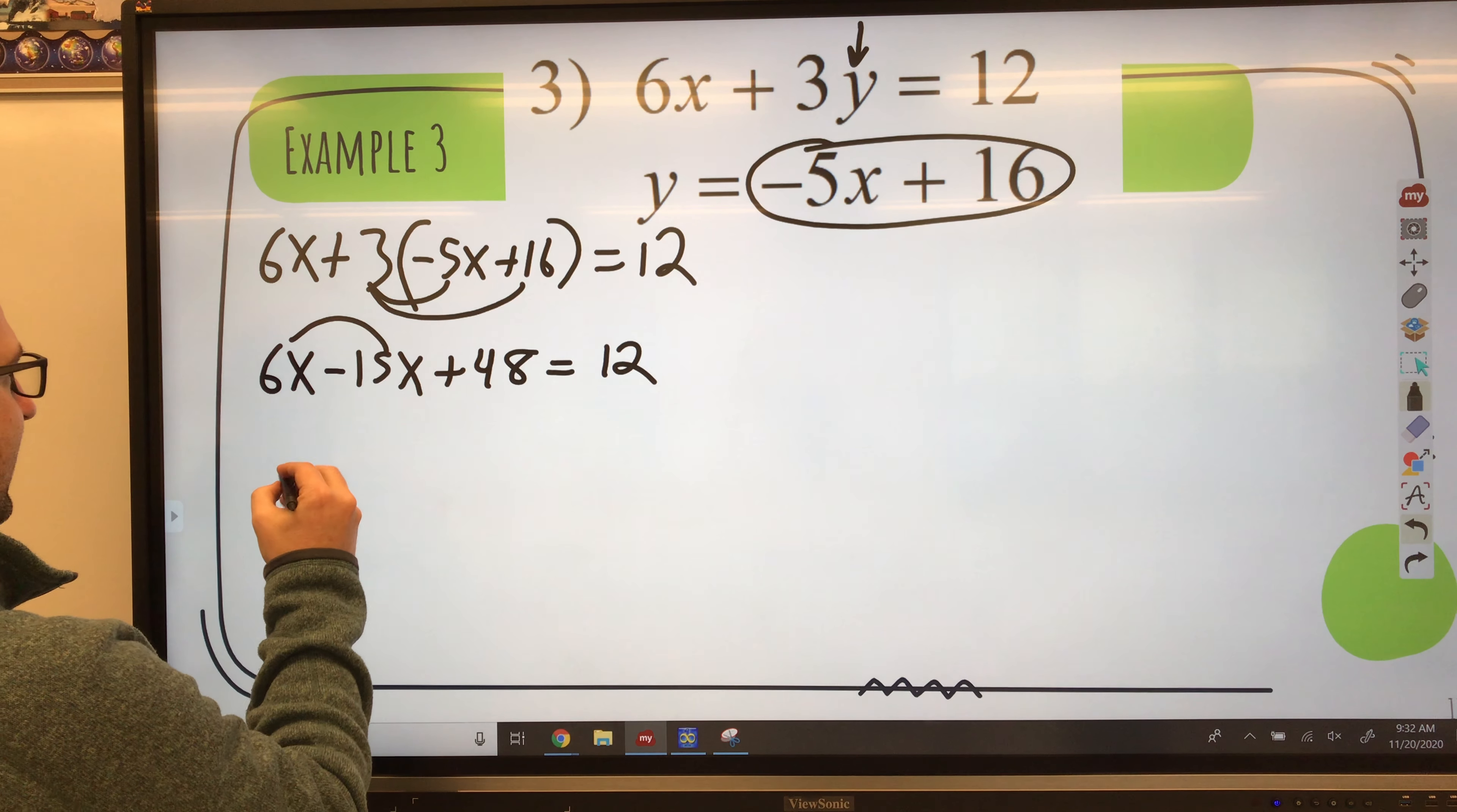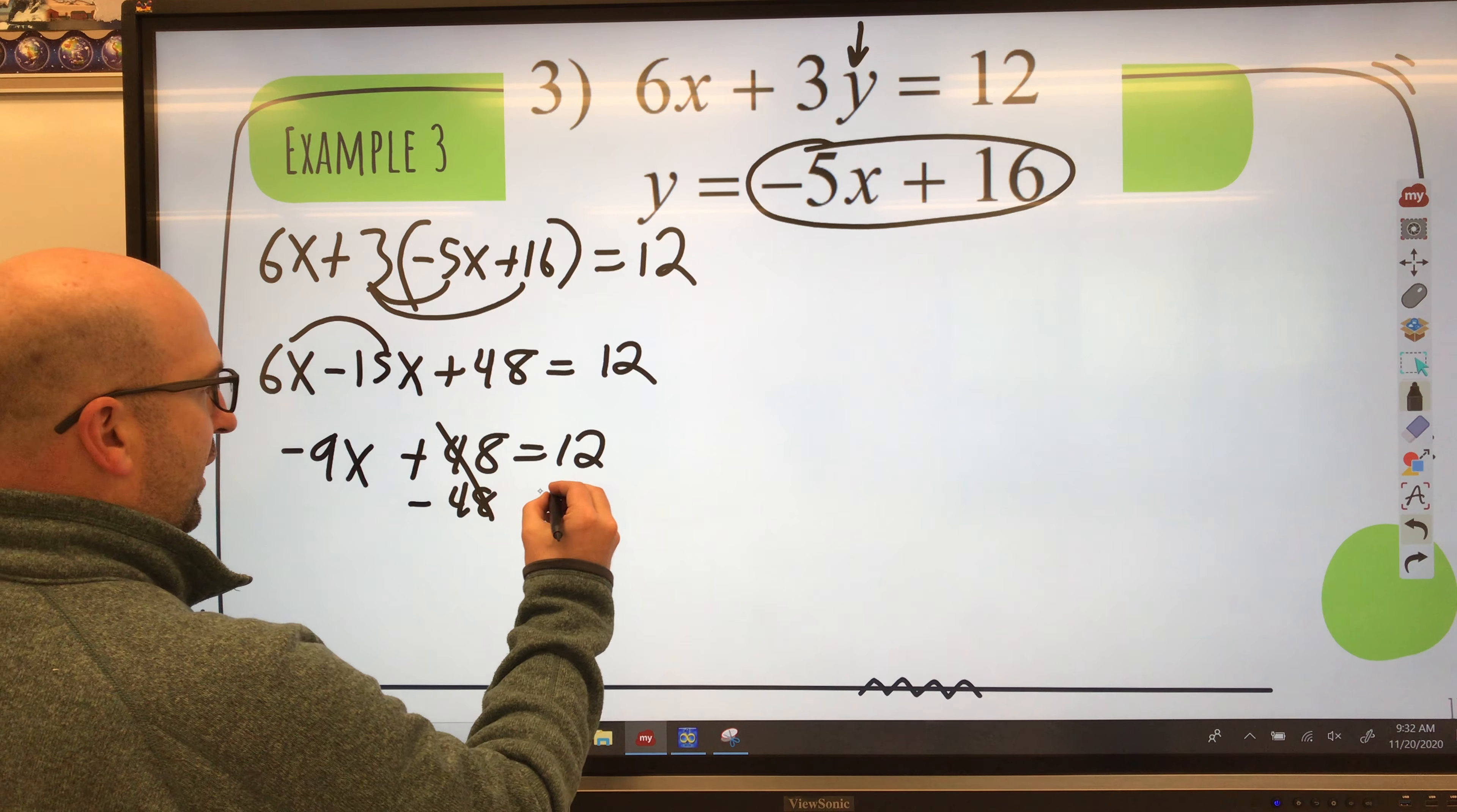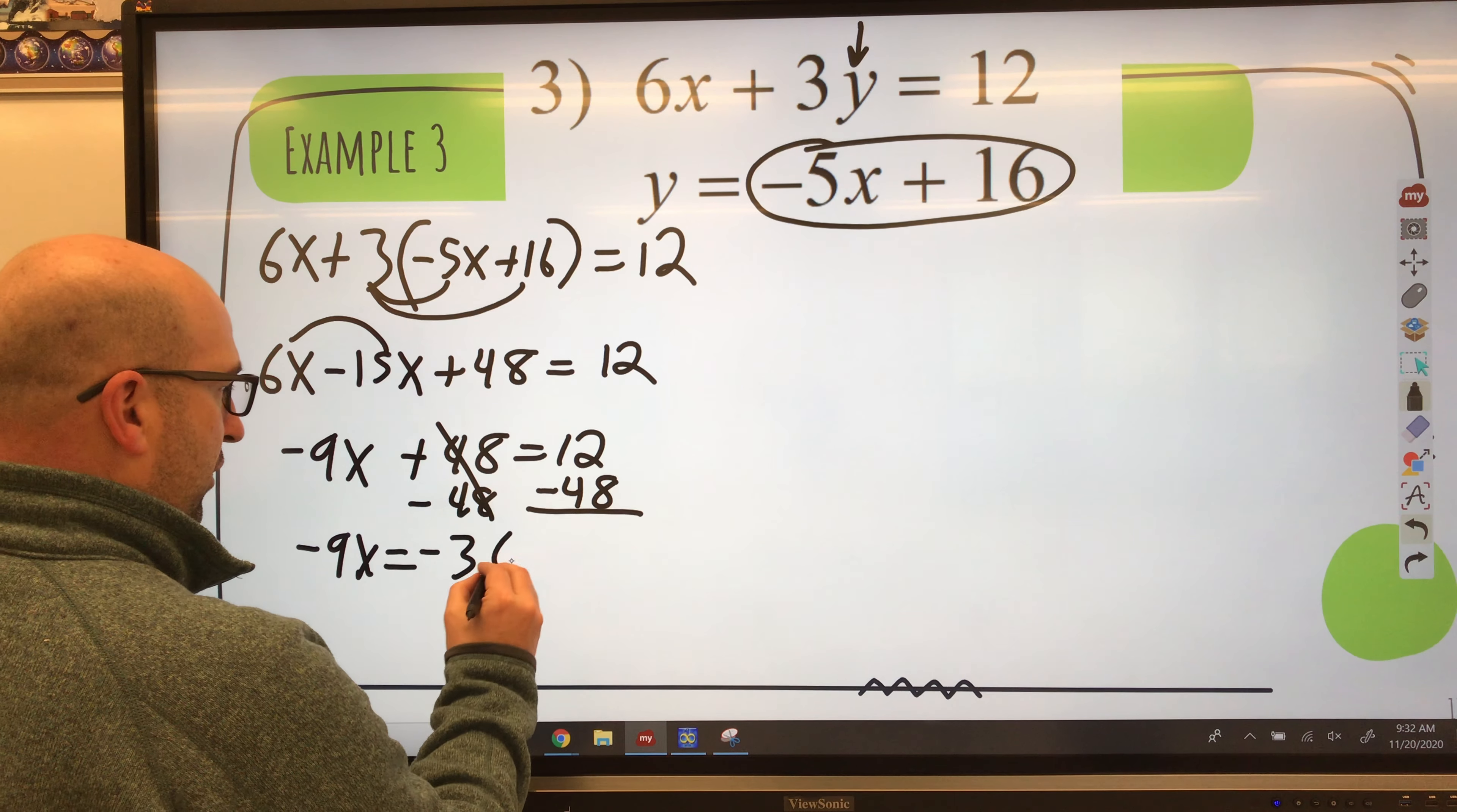So 6 minus 15x gives me negative 9x plus 48 equals 12. Well, to get x by itself, I'm moving the 48. So I'm going to do its opposite or inverse. So I'm subtracting 48. Balance the equation.